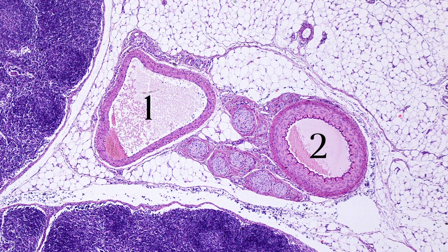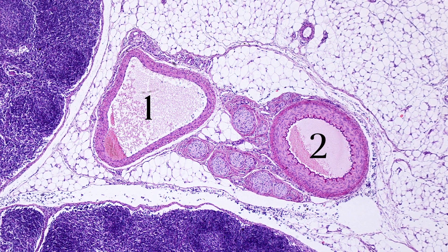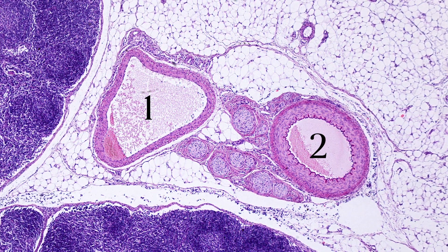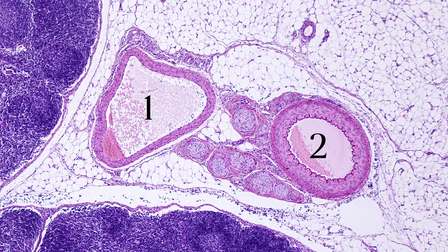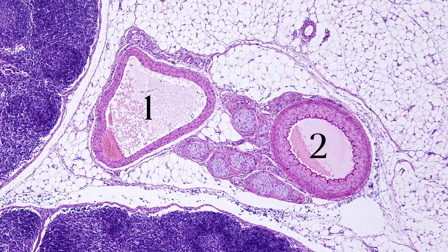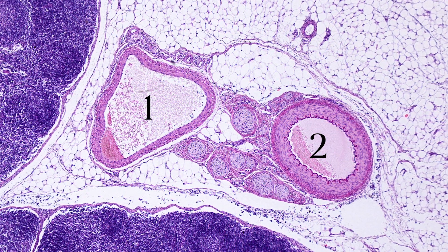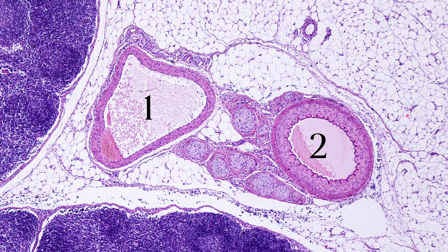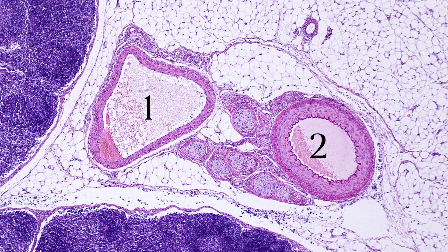I have a quiz for you. Both of these circles are chopped up sections of your blood vessels. One is an artery, the other is a vein. If you think you know which one is which, leave your answer in the comments and I'll give you the answer at the end of the lesson. Let's get into the video.